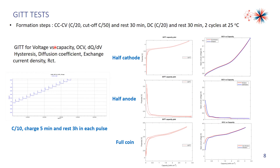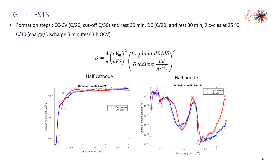This slide shows the GITT test. For this part, we aim to get the voltage versus capacity profile, the OCV, DQ/dV, heat resistance, diffusion coefficient, exchange current density, and RCT. This figure shows the typical charge profiles at C/2. In each pulse, we charge 5 minutes and rest 3 hours. These three figures show the voltage profiles for the half cathode, half anode, and full coin. From these figures, we can also obtain the OCV profiles and the DQ/dV heat resistance. For the diffusion coefficient, by using the Cottrell equation in MATLAB code, we get the diffusion coefficient for the half cathode and half anode. We can see the diffusion coefficient in the half cathode is higher than that in the half anode.